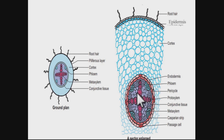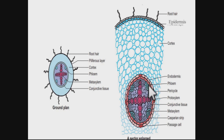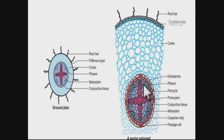In the case of the vascular bundle, unlike dicot stem, there are no conjoint collateral vascular bundles here. The xylem and phloem tissue are not on the same radius but are on alternate sides, separated by parenchymatous conjunctive tissue. When xylem and phloem are on different sides, we call this a radial arrangement — this is the major difference between the stem and root.